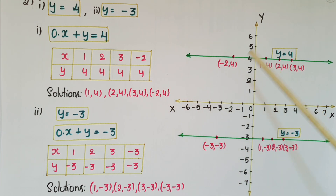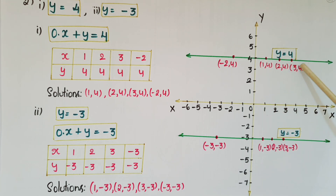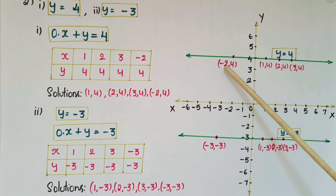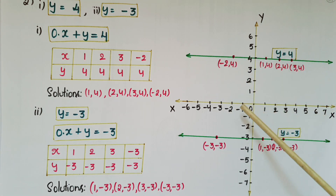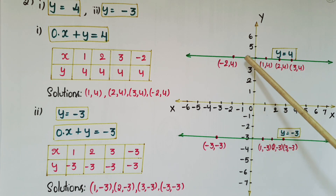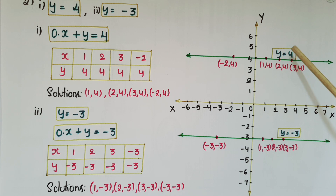Mark these points on the graph: (1,4), (2,4), (3,4), and (-2,4). Join these points and you get a line parallel to the x-axis at a distance of 4 units above it. This is the linear equation y = 4 in two variables.